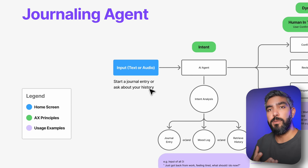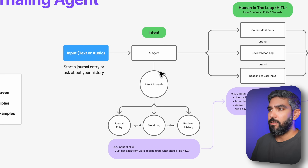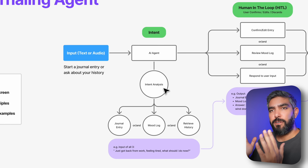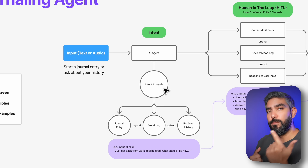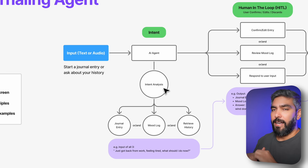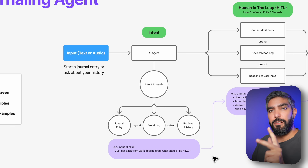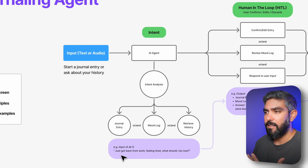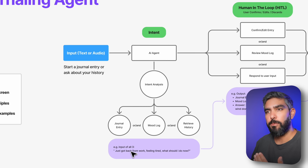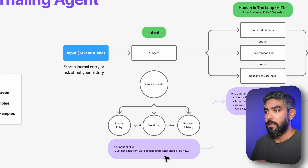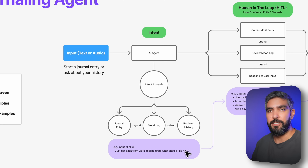The user enters text, and the AI agent understands what this person is looking for. I added limitations and a framework for the AI to work with — asking it to figure out whether there's a journal entry, a mood log, or a question that needs answering based on the user's history. It can be any one, two, or a combination of all three. An example prompt that includes all three: if a person says 'just got back home, feeling tired, what should I do now?' — that contains a journal entry, a mood log, and a question the agent will answer by retrieving user history and suggesting next steps based on patterns.